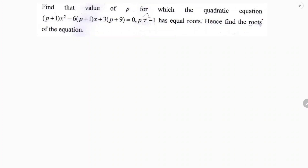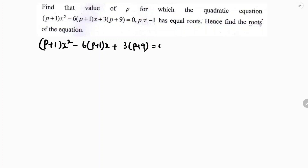Find the value of p for the quadratic equation: (p+1)x² - 6(p+1)x + 3(p+9) = 0, where p ≠ -1, given that the roots are equal. Since the roots are equal, b² - 4ac = 0.